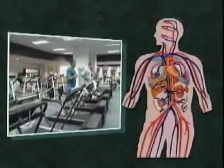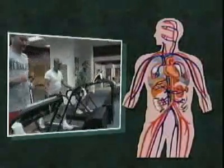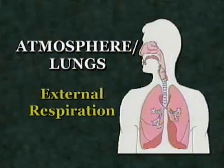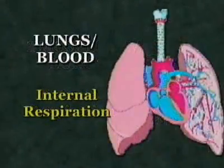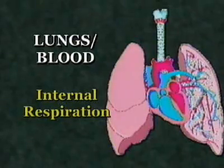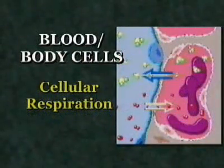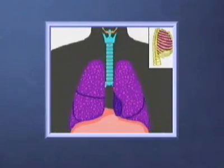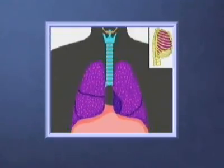There are three places where oxygen and carbon dioxide are exchanged within the body. One: atmosphere to lungs — external respiration. Two: lungs to blood — internal respiration. And three: blood to body cells — cellular respiration. The body exchanges gases with the atmosphere by inhaling and exhaling.